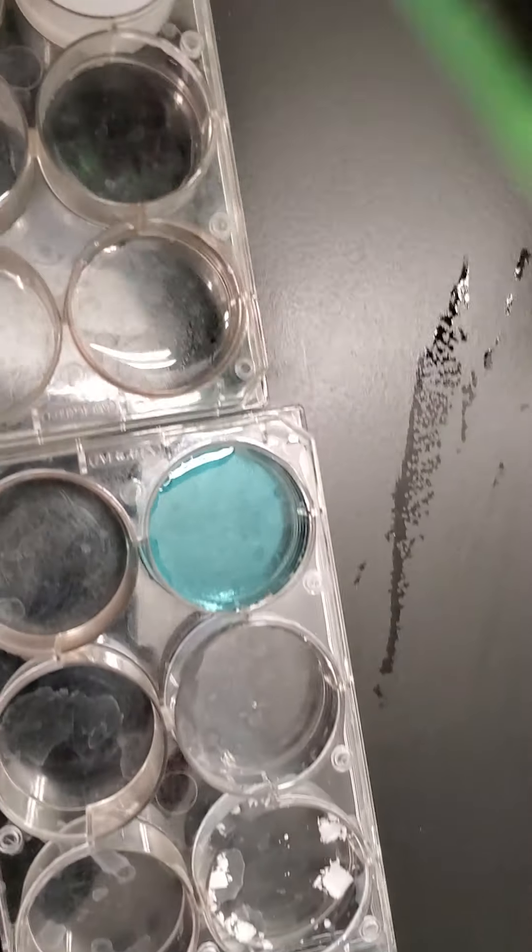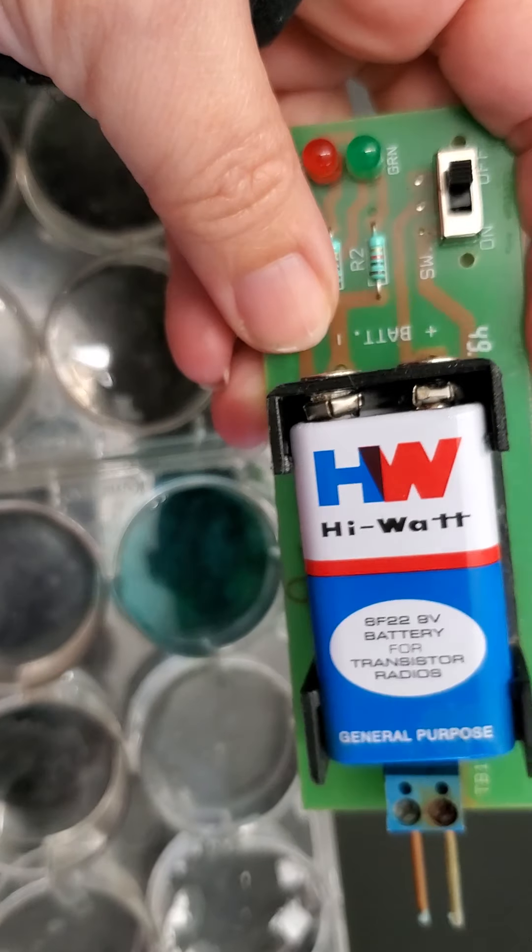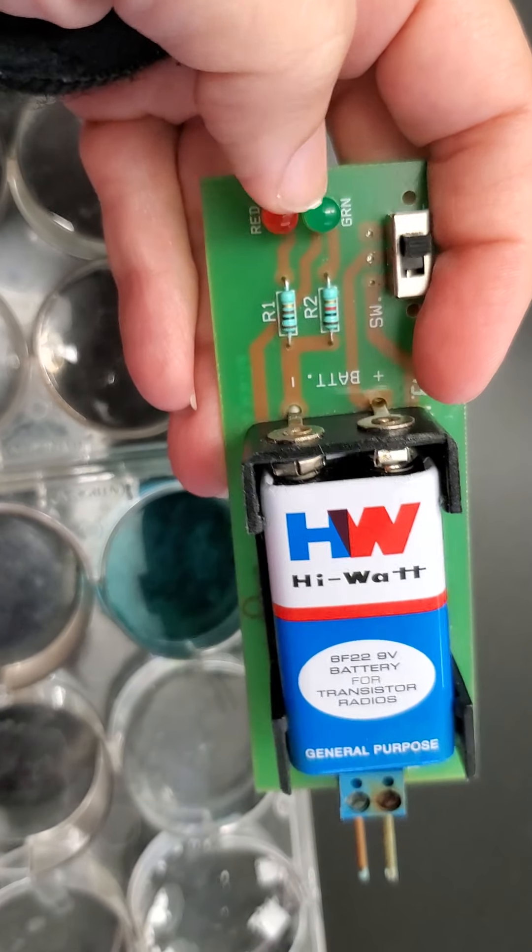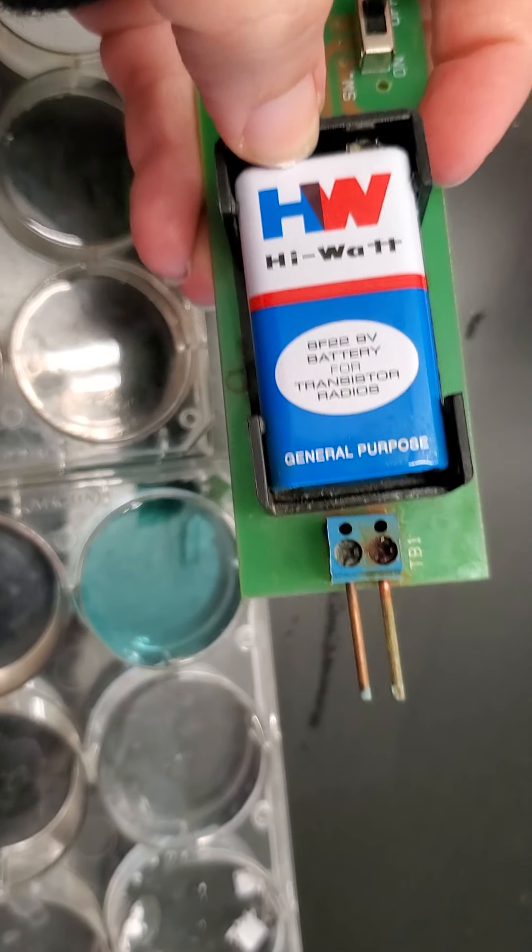I have my little conductivity tester. What it has is an on-off switch, so right now it's off. It has these two lights—a red light and a green light—and a battery, of course.